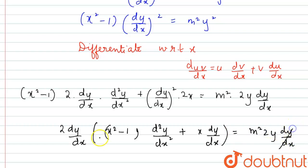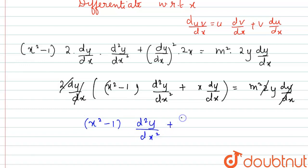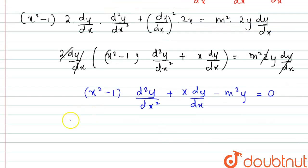dy/dx and the factor of 2 cancel from both sides. Bringing the right-side term to the left, we get: (x² − 1)(d²y/dx²) + x(dy/dx) − m²y = 0. This is exactly what we had to prove according to the question. Hence proved.